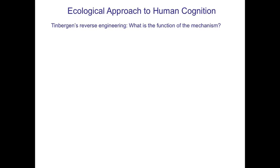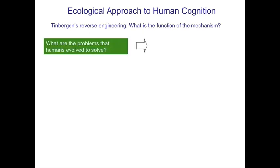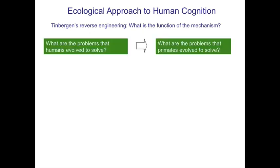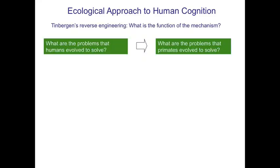We've been using Tinbergen's reverse engineering, or using function to predict mechanism. If we think about what the function of human cognition would have been for, we might understand why the mechanisms evolved. So what are the problems that humans evolved to solve, and what are the problems that primates evolved to solve? If we can answer that question, we'll have a lot of insight into Darwin's challenge.